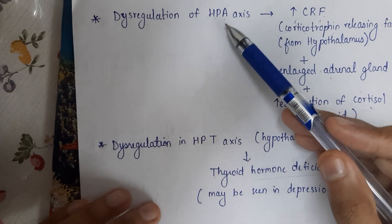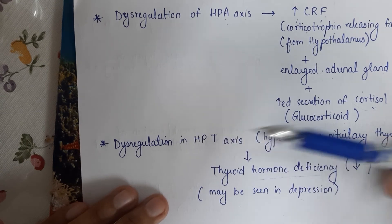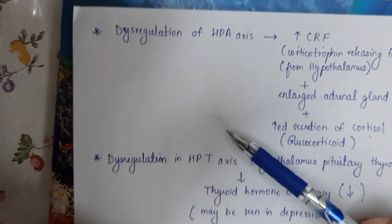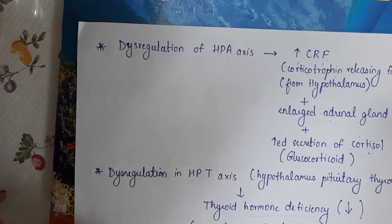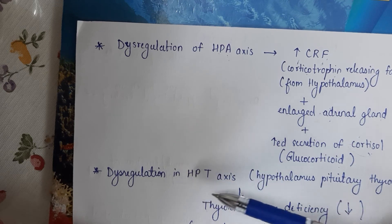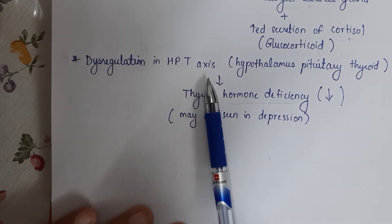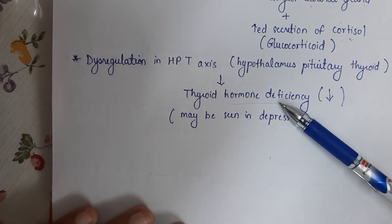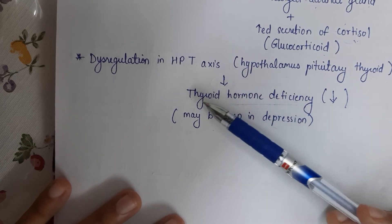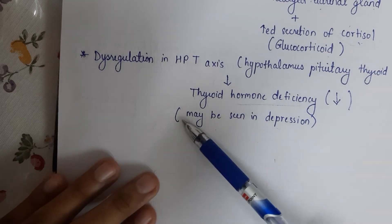Similar to the HPA axis, there is another axis called the HPT axis — hypothalamus-pituitary-thyroid. These two axes are neighbors, so if HPA is affected, HPT also has a chance of being affected. There is a dysregulation in the HPT axis, and what happens is thyroid hormone decreases. Thyroid hormone deficiency can be a symptom seen in depression — it may be a warning sign, though not confirmed.